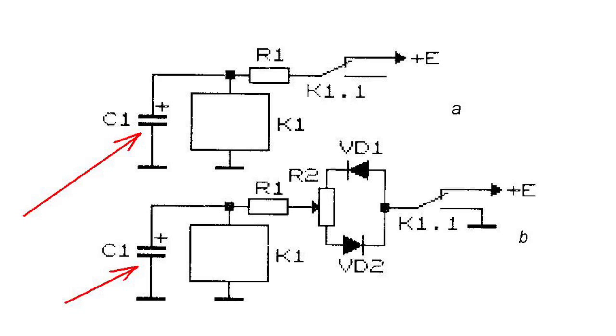The time of the charge-discharge cycle for capacitor C1 can be adjusted with the help of potentiometer R2.